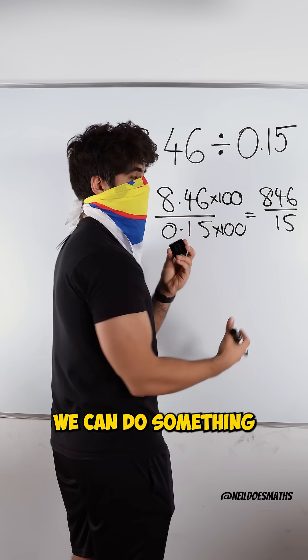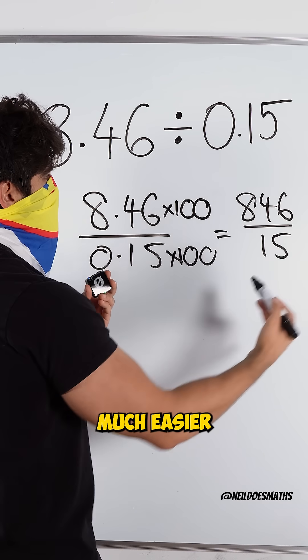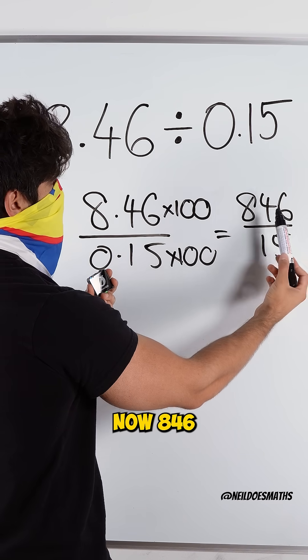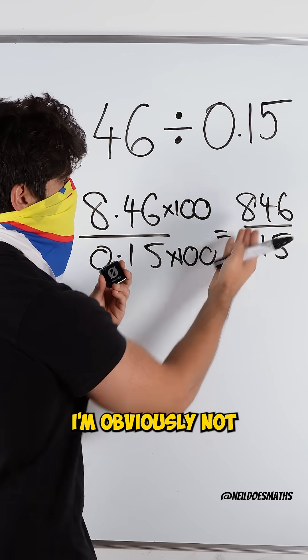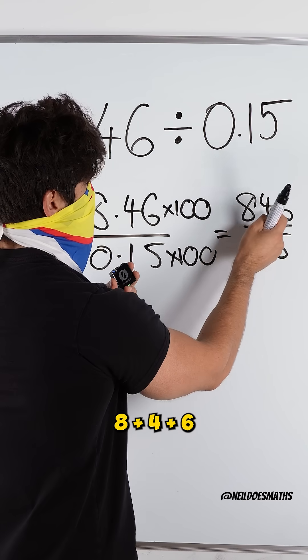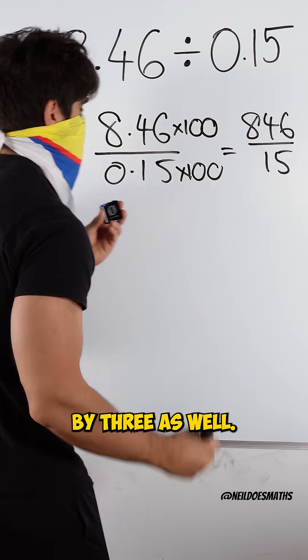Now, because we're dealing with fractions, we can do something cool, which is to simplify the fraction and give us something much easier to deal with. Now, 846, I notice, is divisible by 3 because 15 is 3 and 5. I'm obviously not going to try 5. 8 plus 4 plus 6 gives me 18, which is divisible by 3, which means this number is divisible by 3 as well.